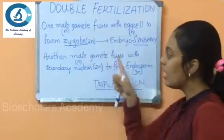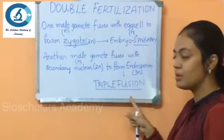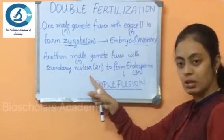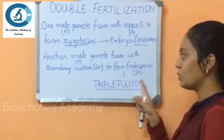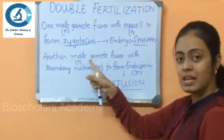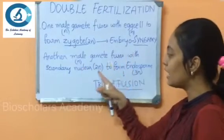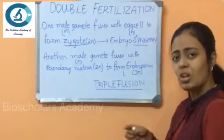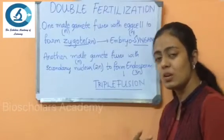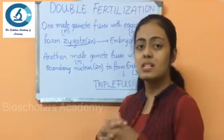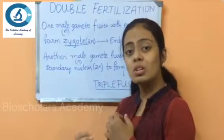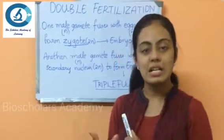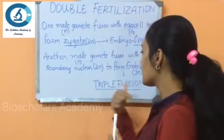The second fusion is called triple fusion. Another male gamete fuses with the secondary nucleus present in the ovule to form the endosperm. The male gamete is haploid, the secondary nucleus is diploid, and therefore the endosperm will be triploid. Endosperm is a nutritive structure that provides nutrition to the growing embryo to become a seedling. This process is called triple fusion.